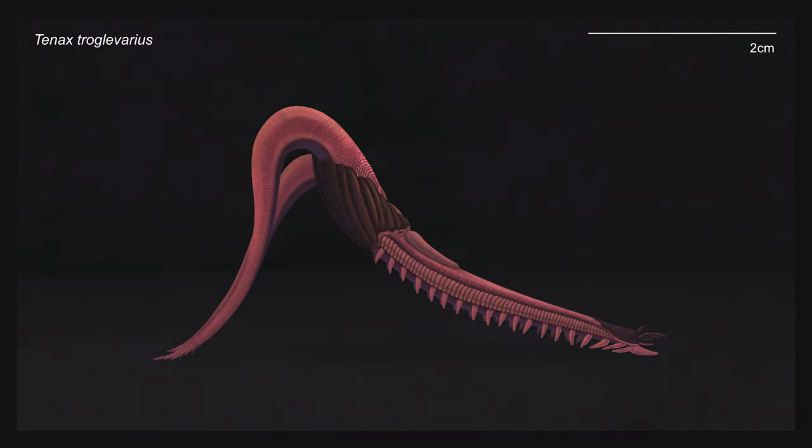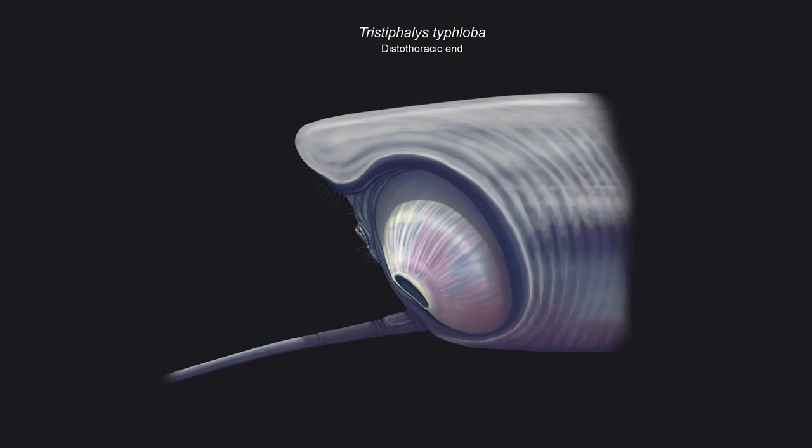Tenax troglivarius is a tiny creature which hides itself in the nooks and crannies of cave systems, lying in wait until it's ready to attack a host. When a wandering Dolikopod like Tristophallus typhloba passes by, troglivarius mounts it, often by dropping from above, and latches onto it using a number of cupped feet. Slowly, it clambers to the creature's distothoracic end where it houses its reproductive organs.